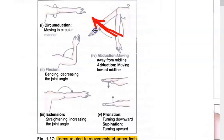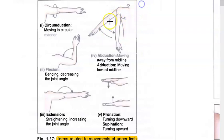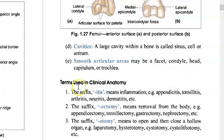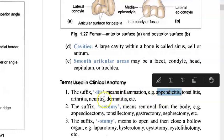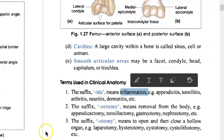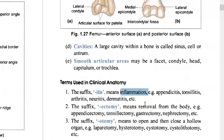Abduction means taking a part away from the central axis of the body. Adduction means bringing it back toward the midline. Adding '-itis' to a word means inflammation — for example, appendicitis, tonsillitis. Inflammation can result from infection, autoimmune causes, trauma, and many other things.